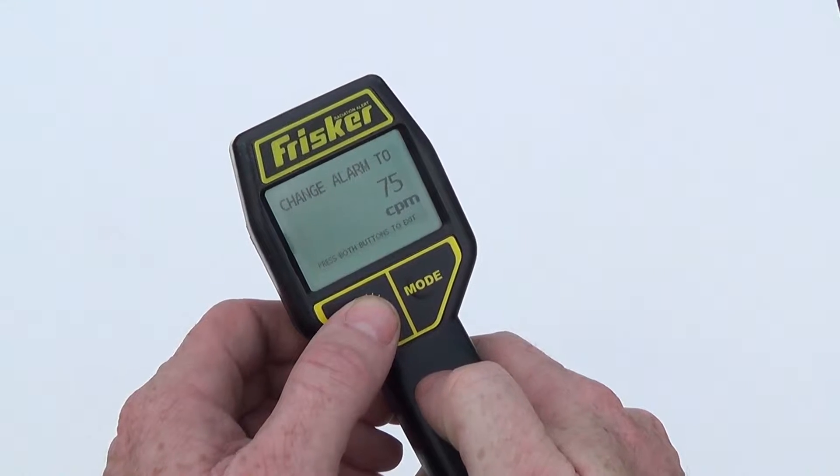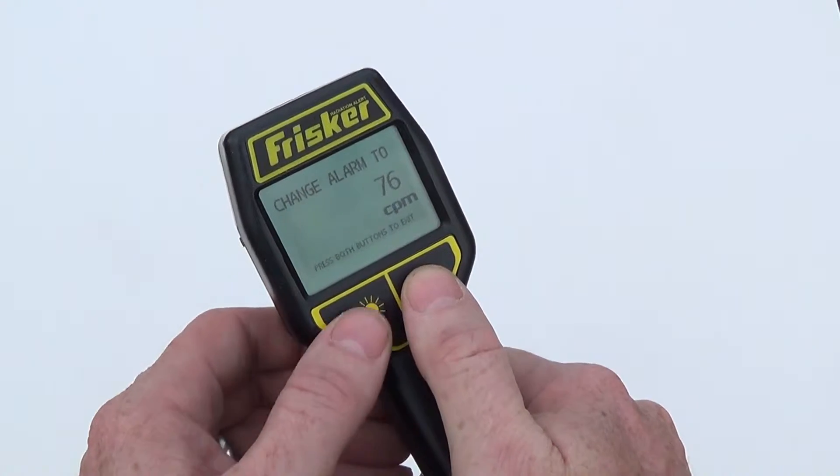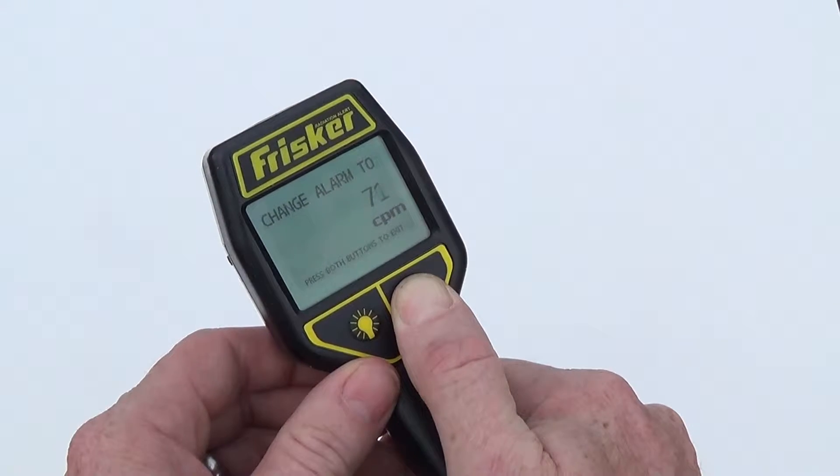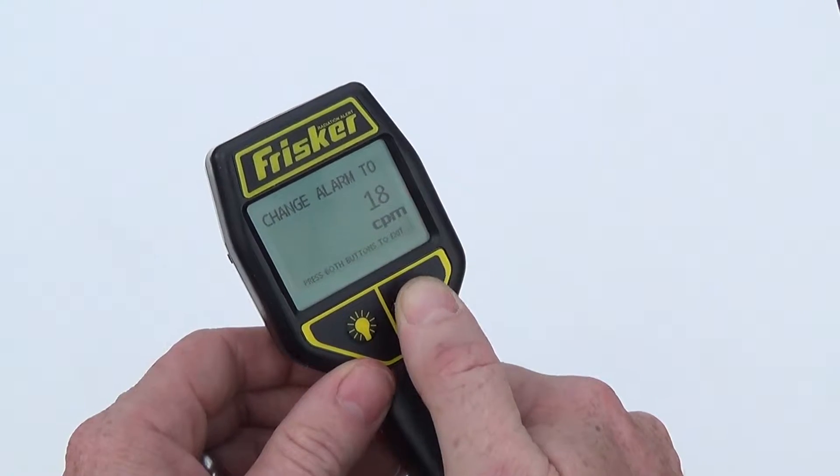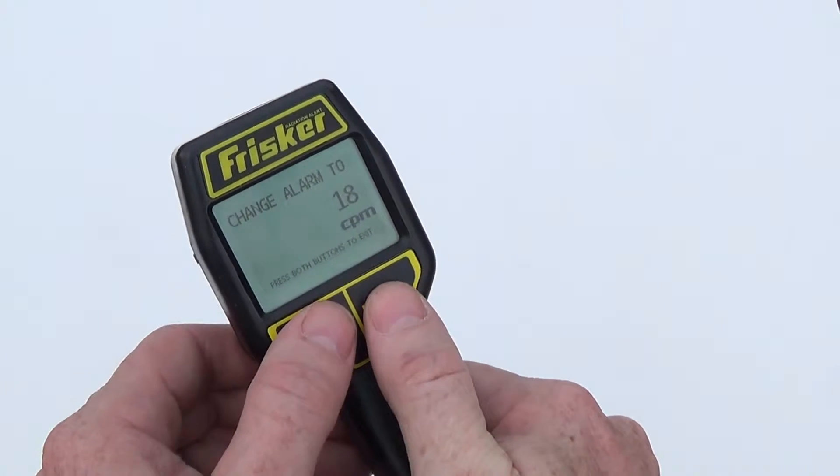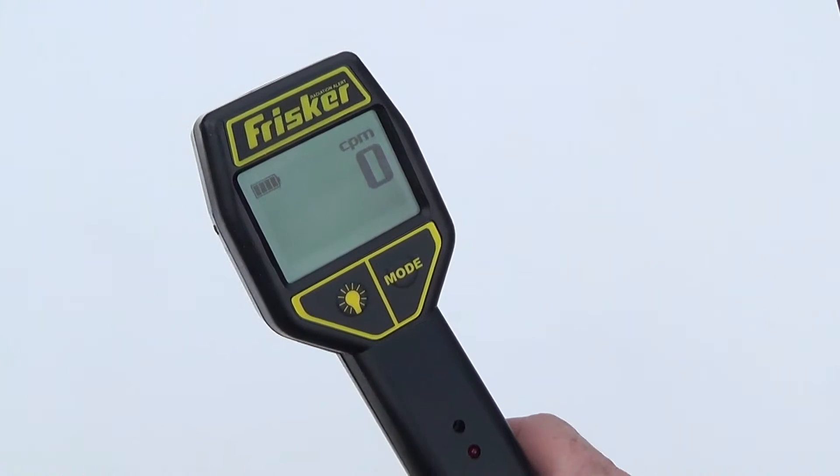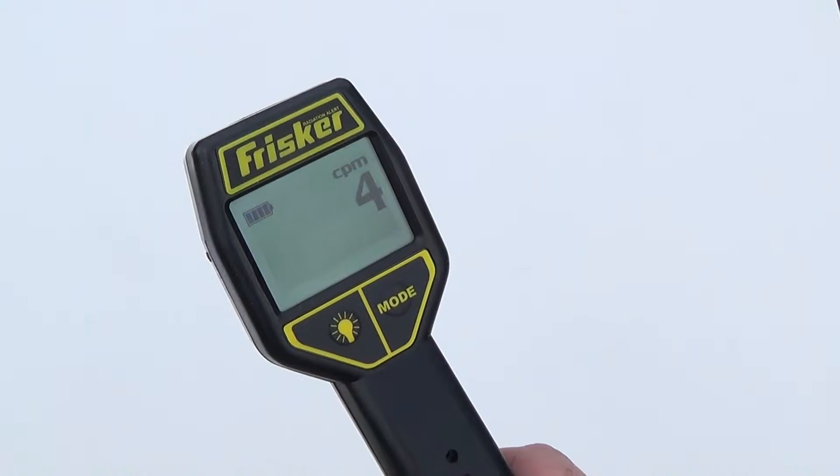Use the backlight button as the plus button to increase the set alarm level, and use the mode button as the minus button to lower the set alarm level. Once you have selected your desired alarm level, press both the backlight and mode buttons at the same time to exit the alarm set menu and resume normal operation of the radiation alert Frisker.